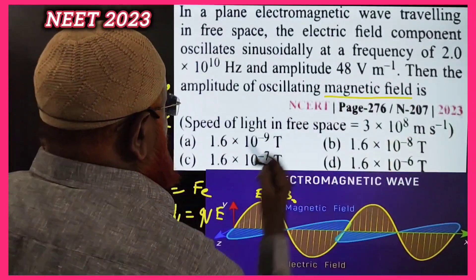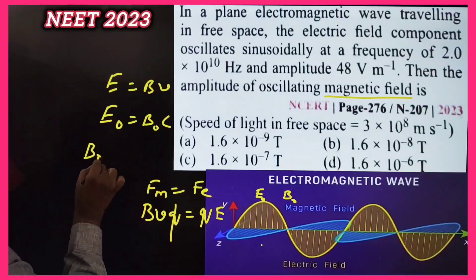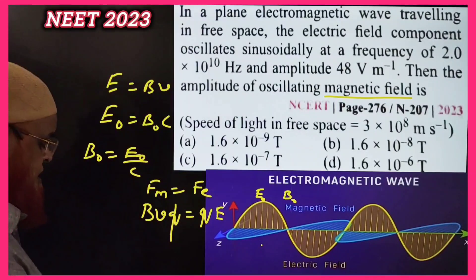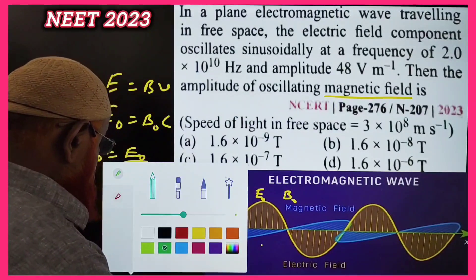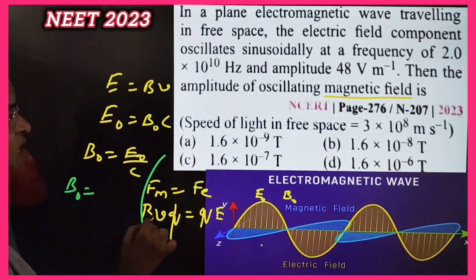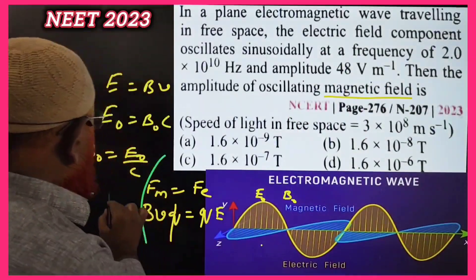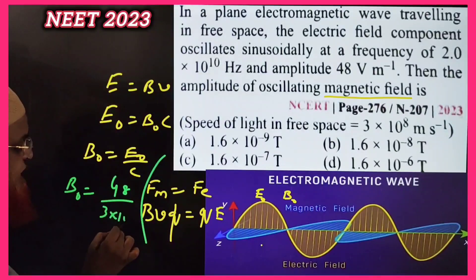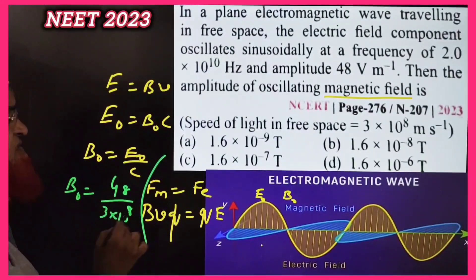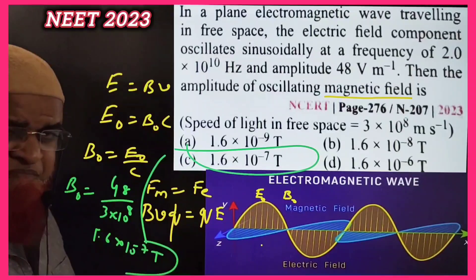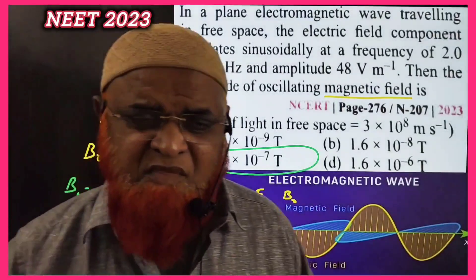We need to find the magnetic field amplitude: B₀ = E₀ / c. Given E₀ = 48, we divide by 3 × 10⁸, giving B₀ = 1.6 × 10⁻⁷ Tesla.